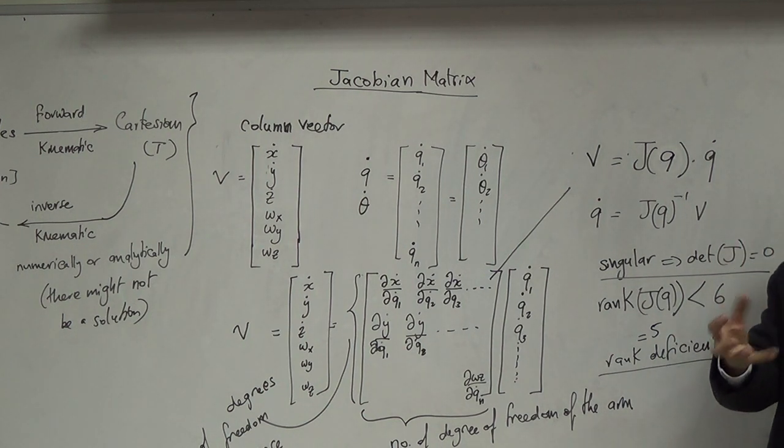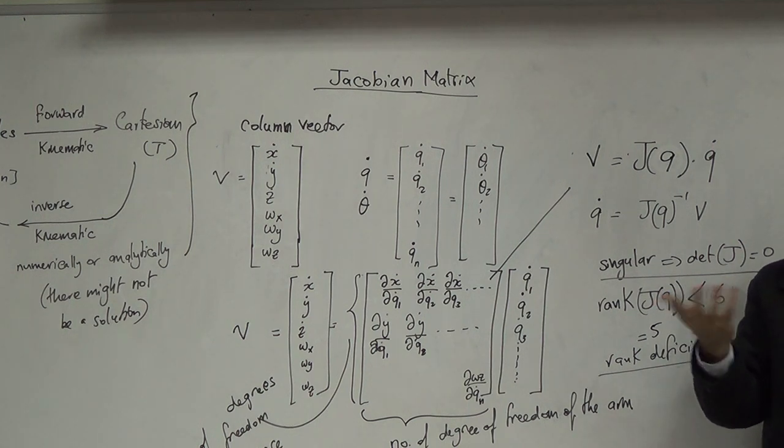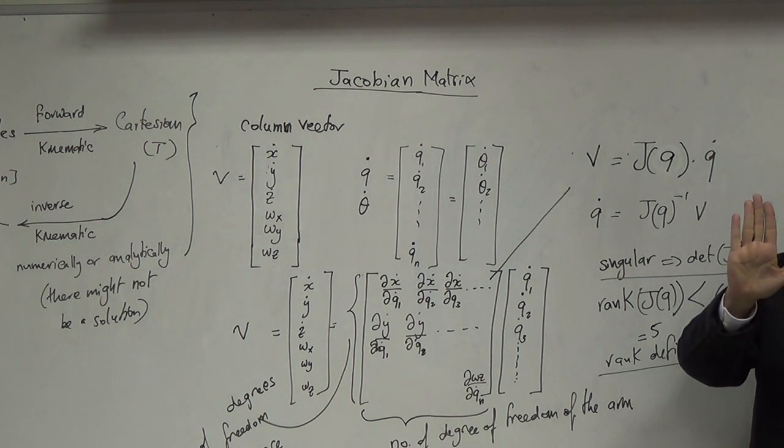وإذا صاروا aligned إيش صار بعدد degrees of freedom الفعلية؟ رح تنزل لـ 5 لأني I lost one degree of freedom. لو حركت theta 4 أو حركت theta 6 نفس الشي، ما أعطانيش إشي جديد. في حين لما تكون theta 5 مش zero إيش بصير؟ تحريك theta 4 بعمل هيك وتحريك theta 6 بعمل هيك.